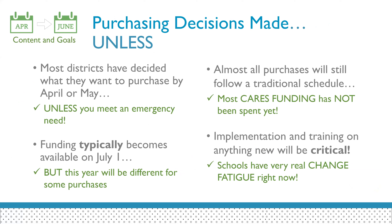The third section is when purchasing decisions are typically made — April, May, and June — with a lot of purchase orders following on a July 1 calendar. Most districts have decided what they want to purchase by April or May, then go through the process and wait for July 1 to buy.